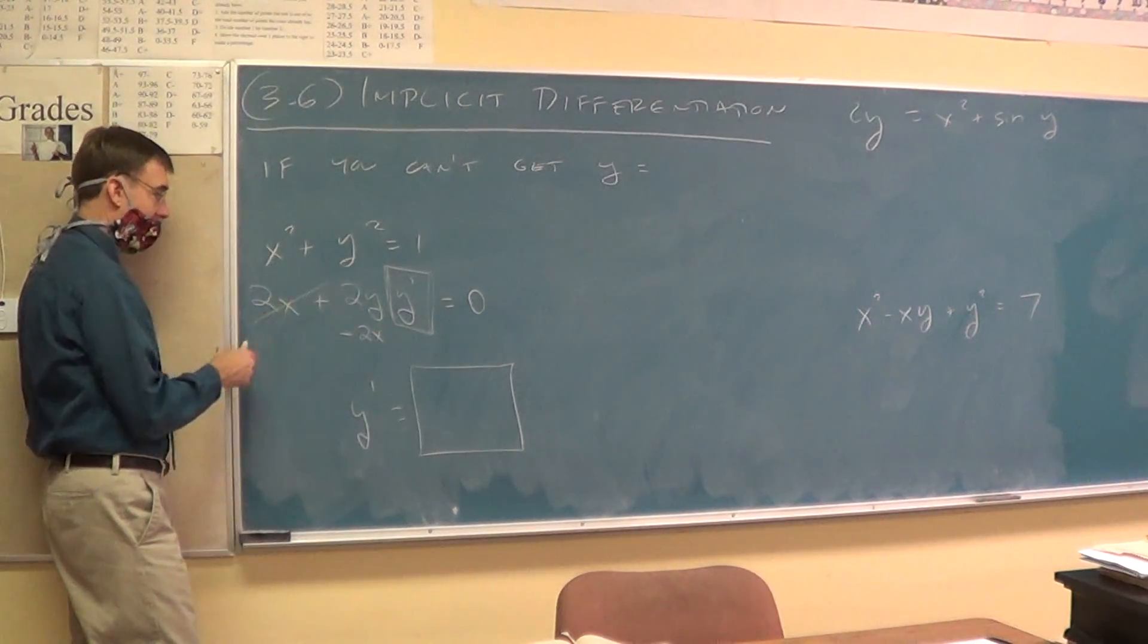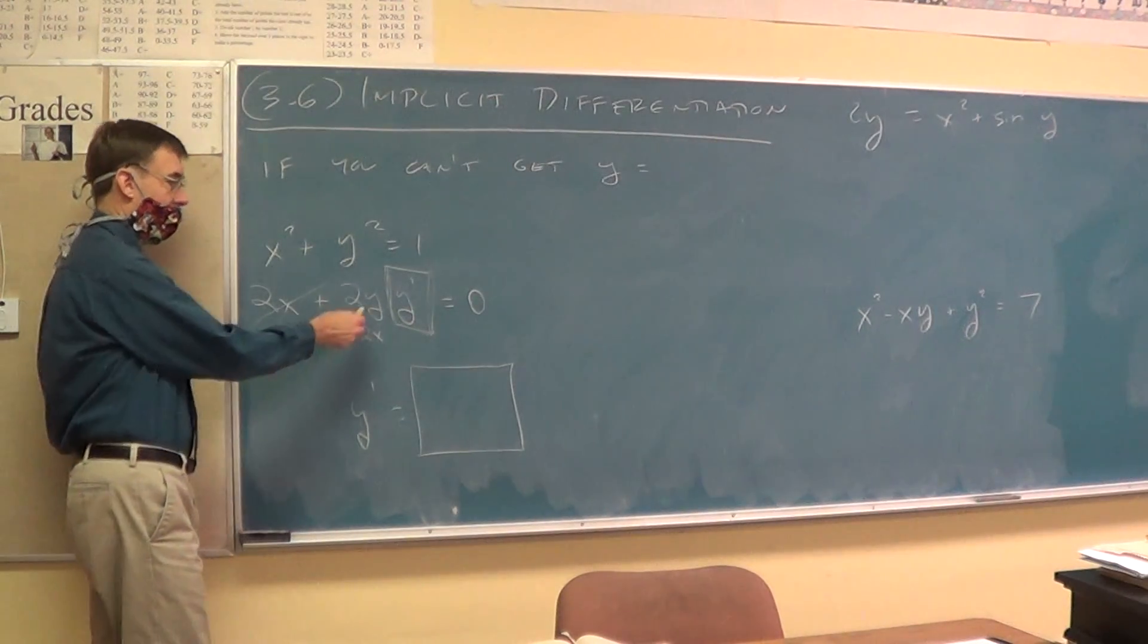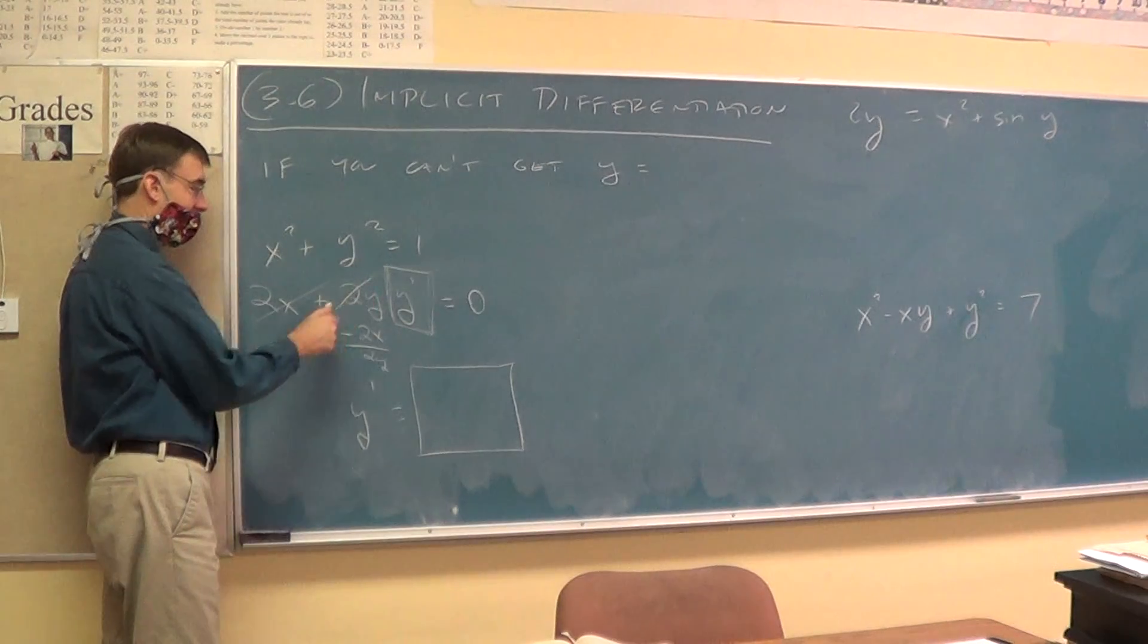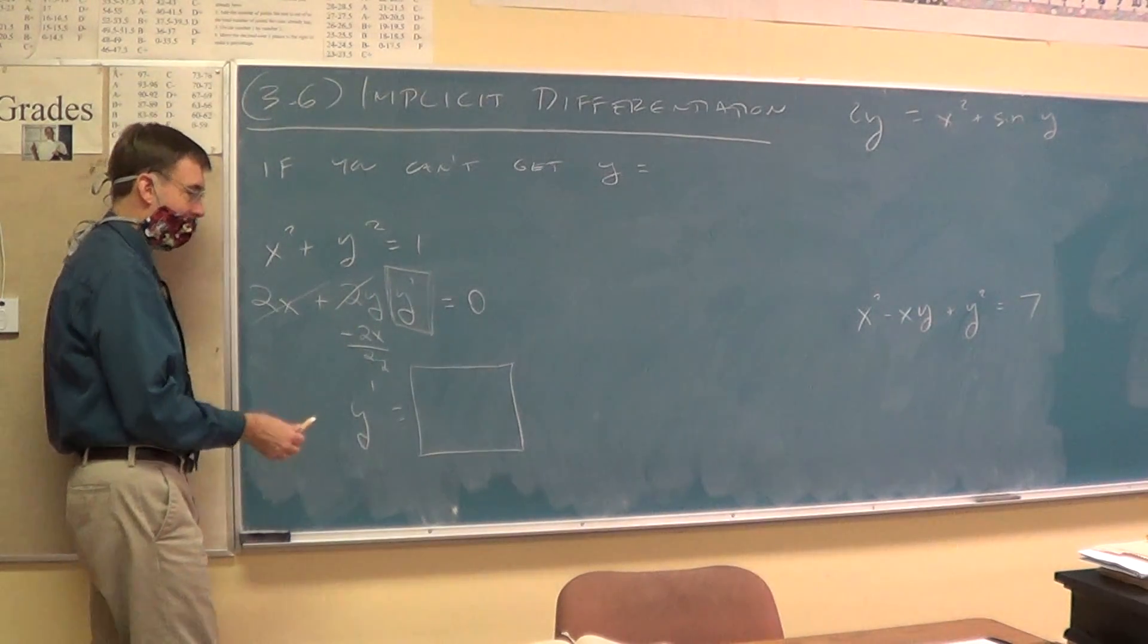Subtract the 2x, I'd agree, so that's out of there. Then what would you do with this? Divide by 2y, so that's out of there. And then clean that up a touch.